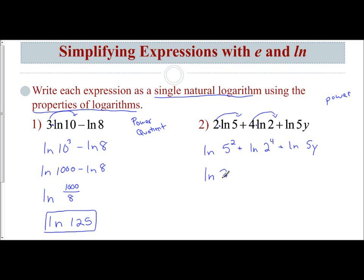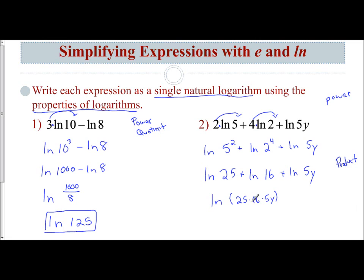5 squared is 25, and 2 to the 4th is 16. So we have natural log of 25 plus natural log of 16 plus natural log of 5y. We're adding logs — that is the product rule, like adding exponents. To combine them into a single expression, you multiply all of them together: 25 times 16 times 5y. 25 times 16 is 400, times 5 is 2,000. So we have the natural log of 2,000y.